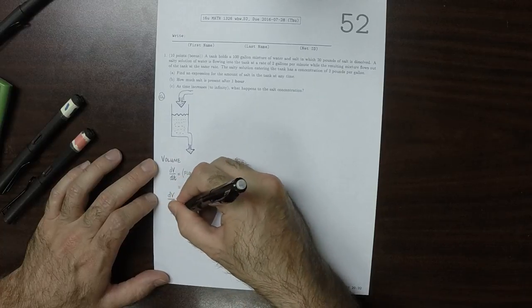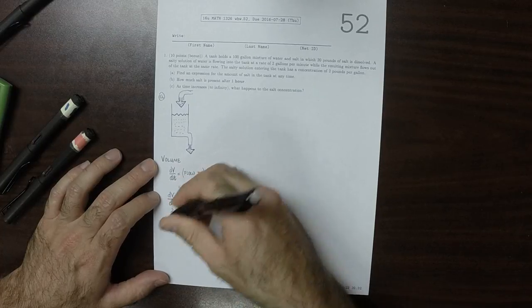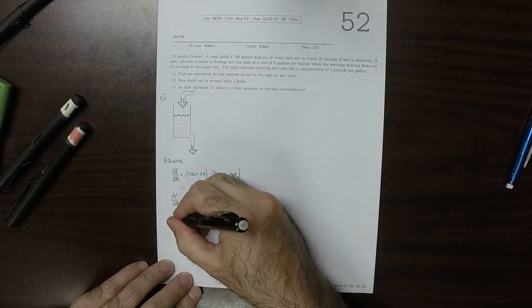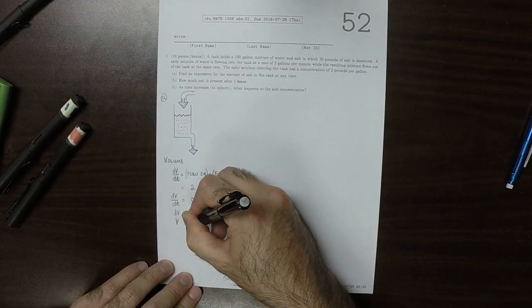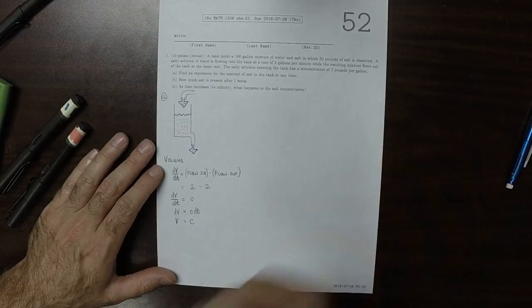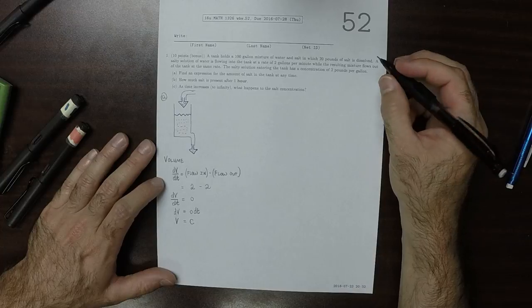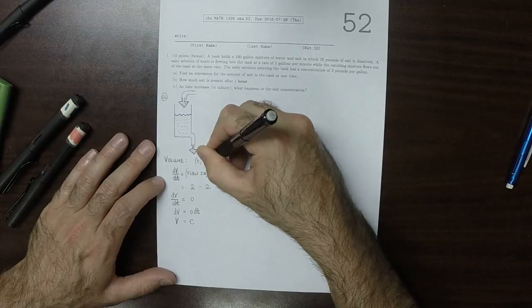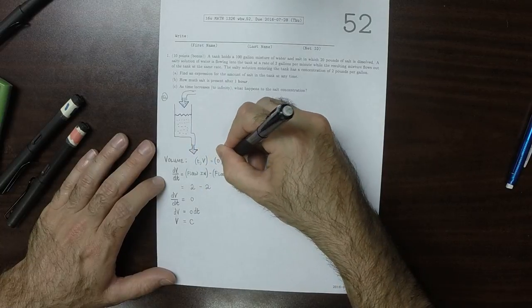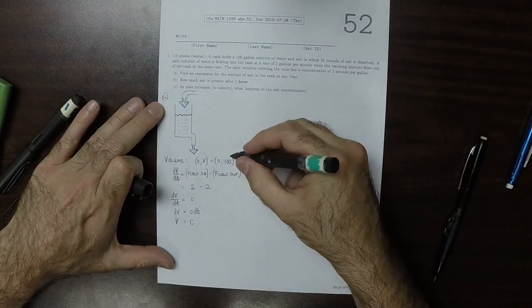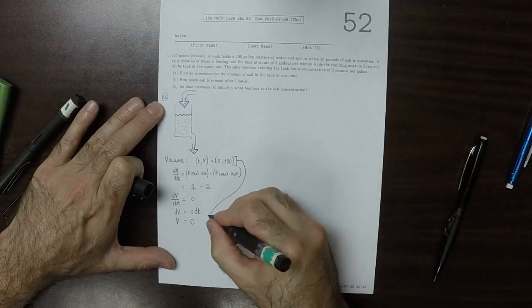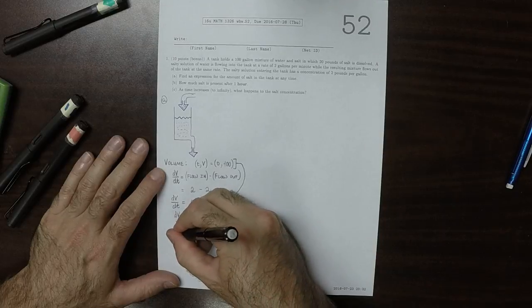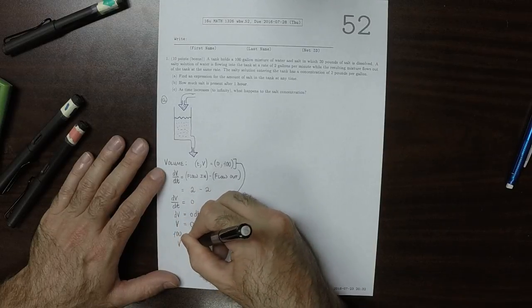So dV is 0 dt. Anti-differentiating both sides, we get V is some constant. And the way that we get that constant is that we use the initial data. The initial data is that at t equals 0, V equals 100. So if we take this data and put it in here, that's telling us that C is 100. So V is 100 for all time.